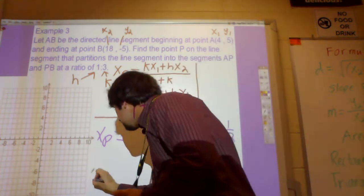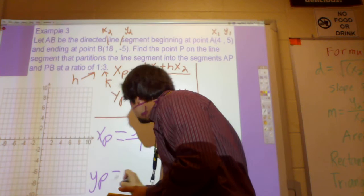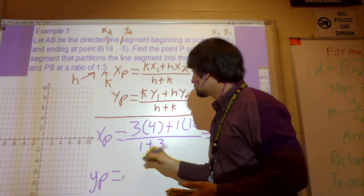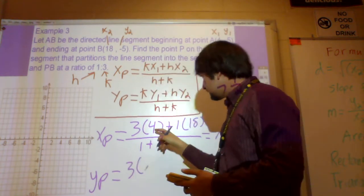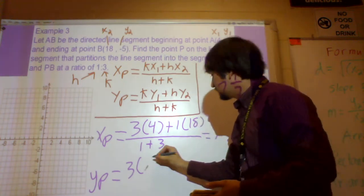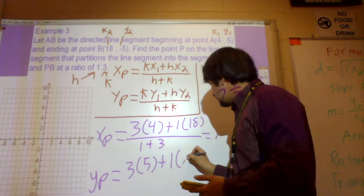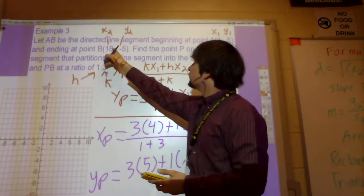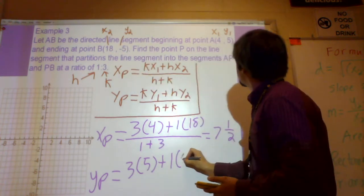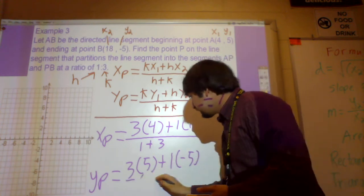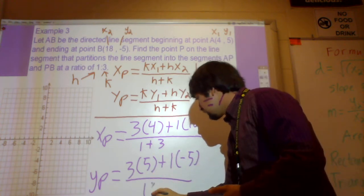And then you would just do your Y part. Y part, you're just going to do K, so you're going to start with 3 again, but this time you're going to use the Y1, so that's going to be 5. And then you're going to take the H, which is 1, and you're going to multiply it by the Y2, which is negative 5. And then you're going to divide it by 1 plus 3 again.